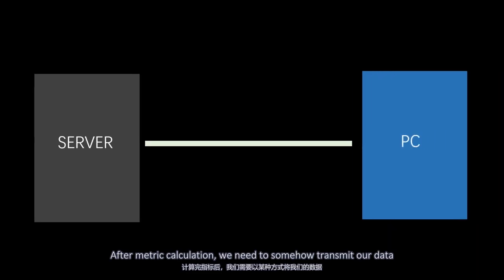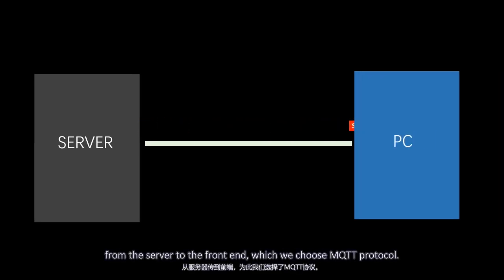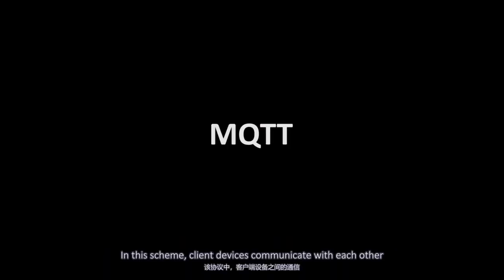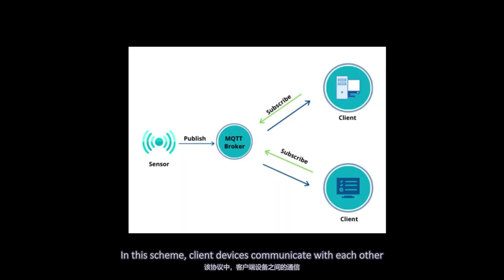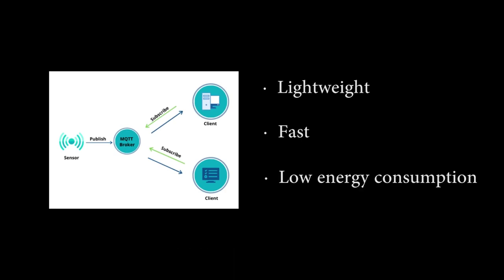After metric calculation, we need to transmit our data from the server to the front end, for which we choose the MQTT protocol. In this scheme, client devices communicate with each other by publishing and subscribing to the MQTT broker. It's especially lightweight, fast, and consumes low energy.